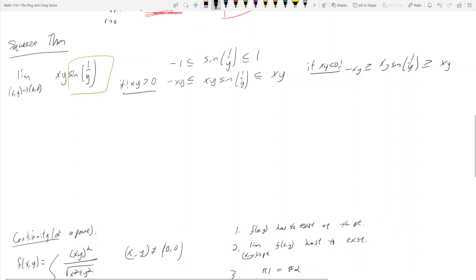Let's just work with this positive case for now. What happens if I take the limit of both sides? Let's take the limit as x,y approaches 0,0 of this entire thing. So now I got the limit of that.